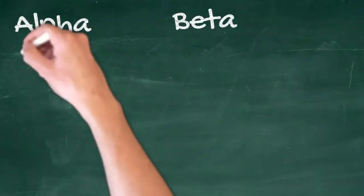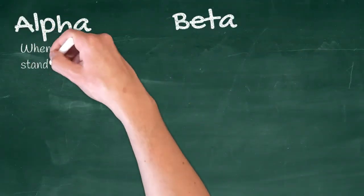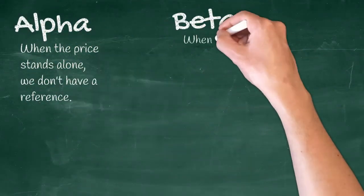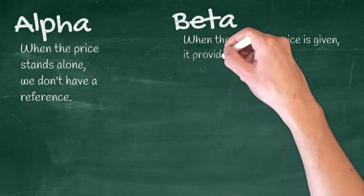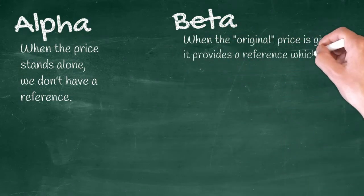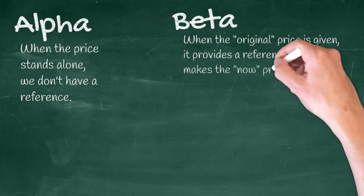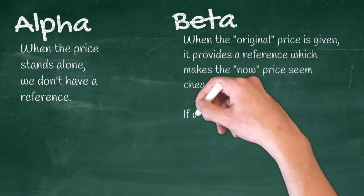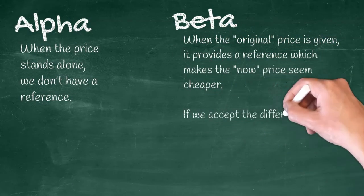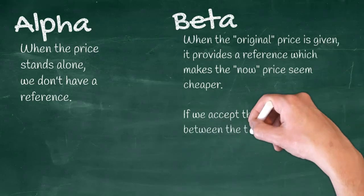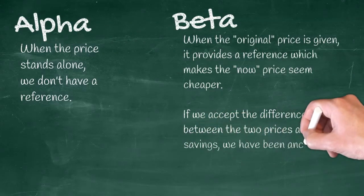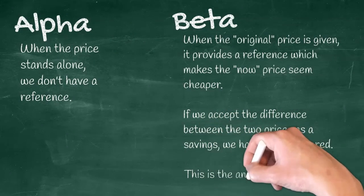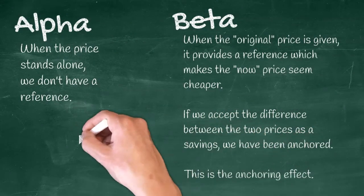Alpha: when the price stands alone, we don't have a reference. Beta: when the original price is given, it provides a reference which makes the current price seem cheaper. If we accept the difference between the two prices as a savings, we have been anchored. This is the anchoring effect.